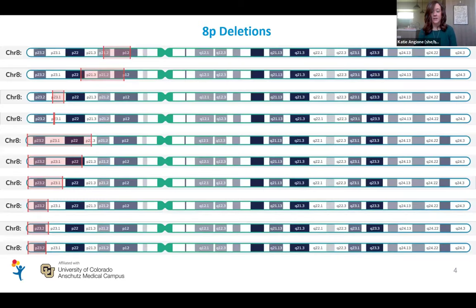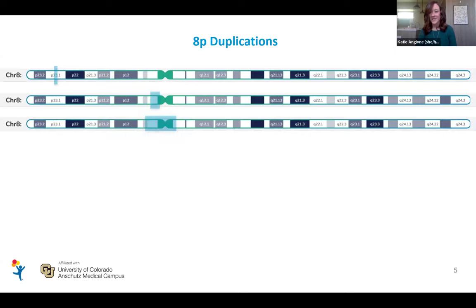This is a breakdown of where the deletions are. Most of them are on the P terminal end with different sizes — a few very similar sizes, and then patients with slightly larger deletions on the terminal end of the P. We have one patient with a tiny deletion in P23.1, and then a few in different areas of the P end of the chromosome. For duplications, we only have a few so far, and they're pretty different from each other in terms of where those duplications are located. We have one very small one over in the P23.1 region.